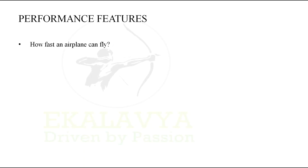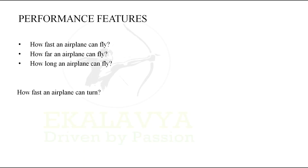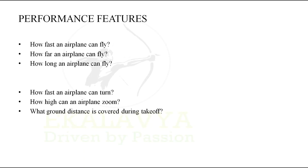What are the performance features of an aircraft? A few examples of performance features are: how fast an airplane can fly, how far an airplane can fly, how long an airplane can fly, how fast an airplane can turn, how high can an airplane zoom, what ground distance is covered during takeoff, and what ground distance is covered during landing.